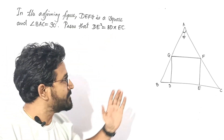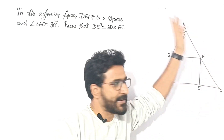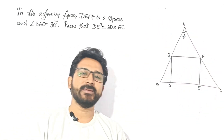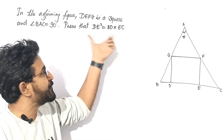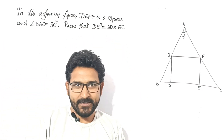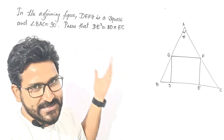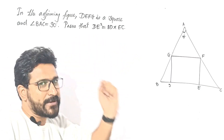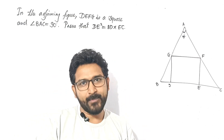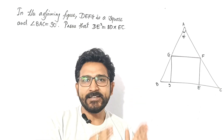We will prove this thing here. We will see this triangle, this triangle, this triangle, and this bigger triangle. Which triangles can be similar? The proof will come from that. If you want to see any side, you can simply see which two triangles are common.